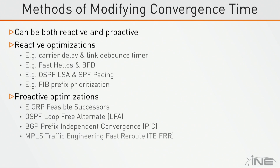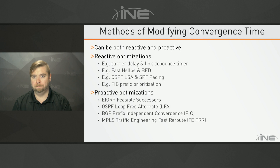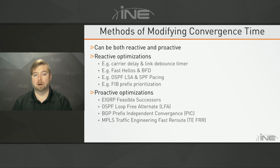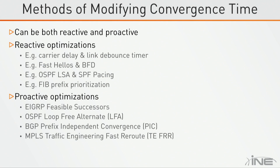Some of the proactive optimizations would be putting backup paths in the topology. For EIGRP feasible successors, you set your metrics like delay or bandwidth so that you have a primary path and a backup path. In our particular case this is probably not as applicable because in fabric routing you're trying to do equal-cost multi-pathing — you want both paths installed as primary at the same time. But at the WAN edge, you might have a primary path and a secondary backup path, and you would want to make sure it's pre-installed in hardware so that if the primary path goes down, you immediately switch over to the secondary WAN.